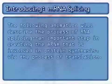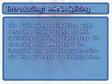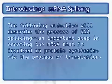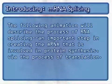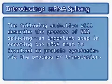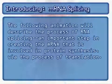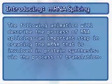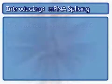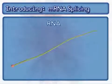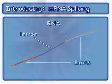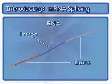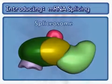The following animation will describe the process of RNA splicing, an important step in creating the mRNA that is involved in protein synthesis via the process of translation. Key factors in this process include RNA possessing introns and exons, and the spliceosome.